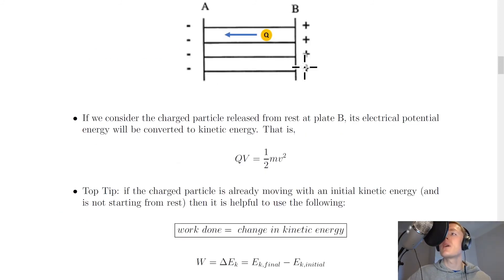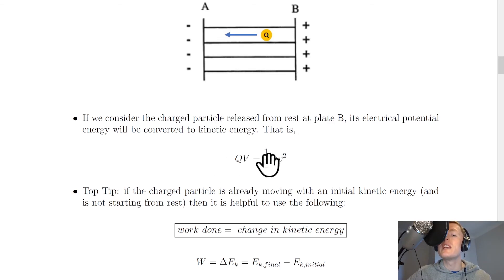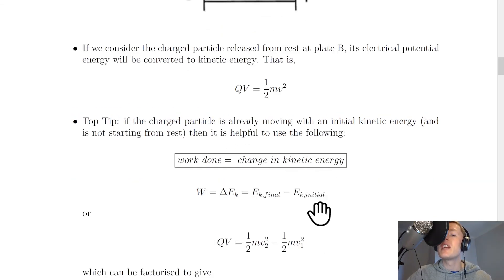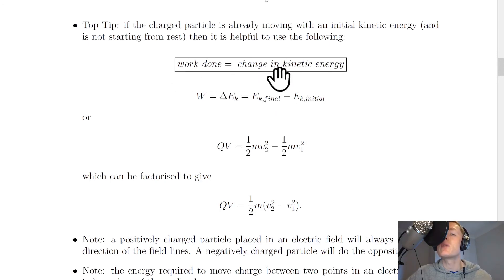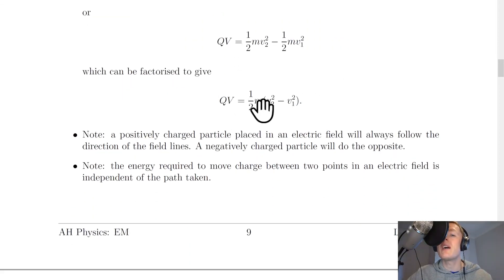To summarise: if the charge starts from rest on the plate, use QV equals a half mV squared, because the initial kinetic energy will be zero. However, if the charge does not start at rest and is already moving with some initial speed, use work done equals change in kinetic energy, or QV equals a half m times V2 squared minus V1 squared.